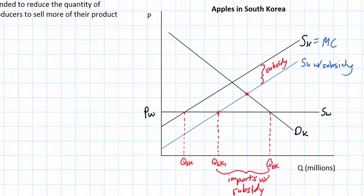Next we can evaluate the effect of the subsidy on different stakeholders in South Korea and abroad. It's not immediately clear from the graph whether consumers and producers are harmed or helped, so we need to look at the areas of consumer and producer surplus before and after the subsidy. Consumer surplus in a free trade diagram is represented by the triangle below the domestic demand curve and above the world price PW. In this case, consumer surplus in the apple market does not change following the subsidy — the yellow triangle represents consumer surplus both before and after.